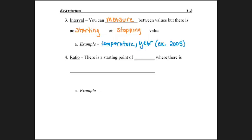But with ratio, not only do we have that distinction, but here we have a starting point of zero. And specifically, zero means there is an absence of the item. It doesn't exist.